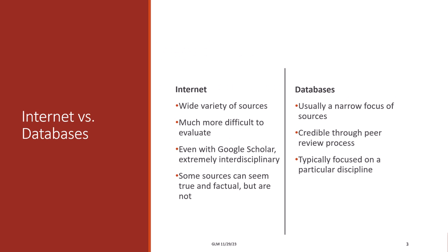What are some of the differences between the internet and databases? Typically, on the internet, there is a wide variety of sources that are much more difficult to evaluate due to their diverse origins. Even with something like Google Scholar, which can be very helpful, it is extremely interdisciplinary and can be challenging to parse through information. Some sources may seem true and factual, but are in fact not.